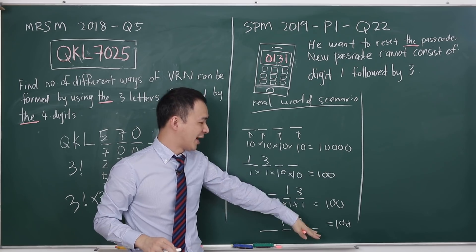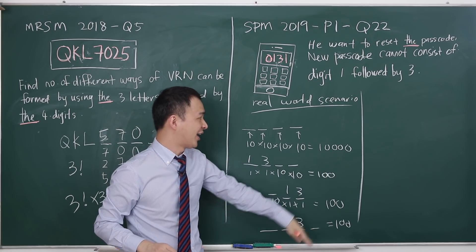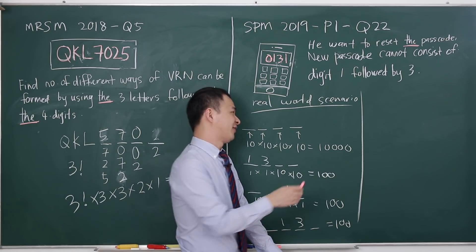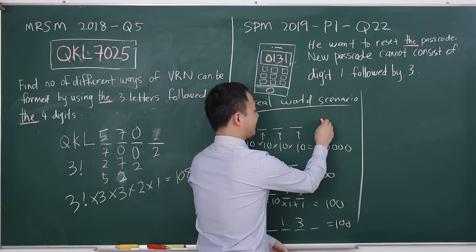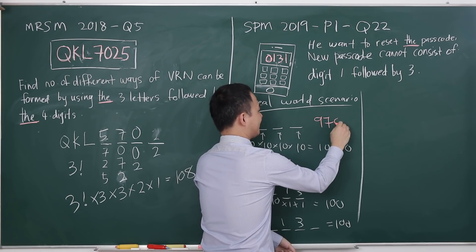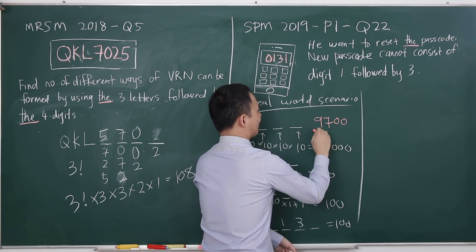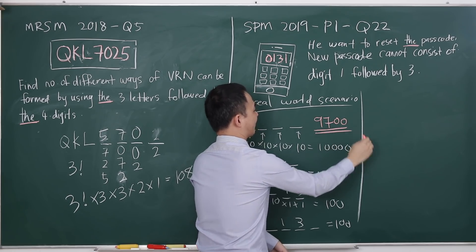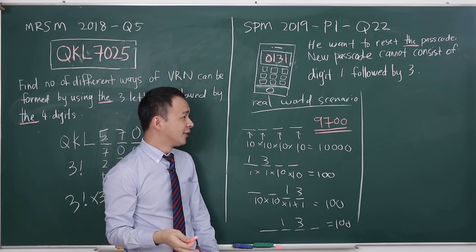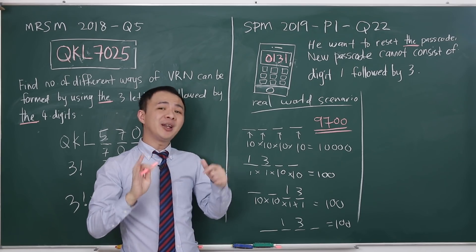So using 10,000 minus 300, the final result for the real-world scenario is 9,700.